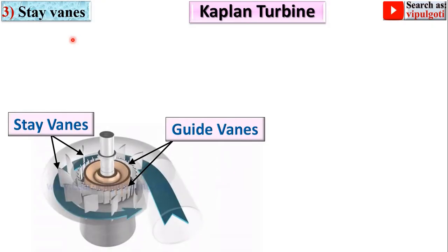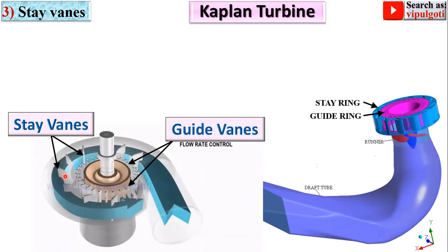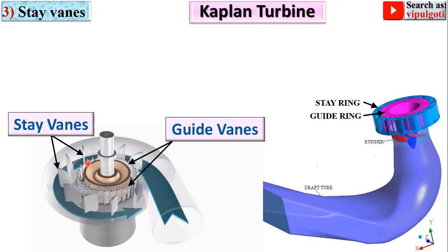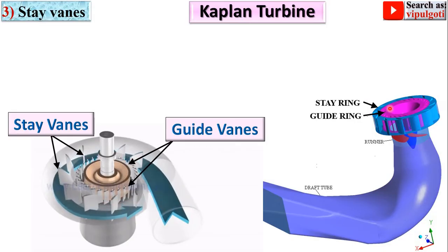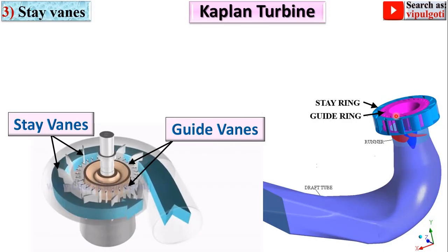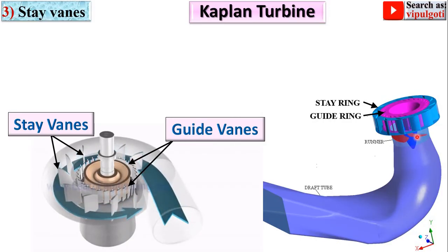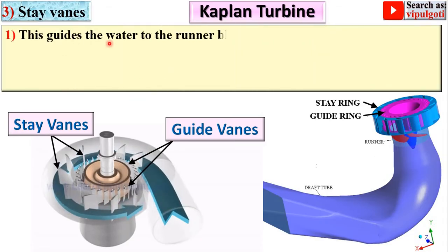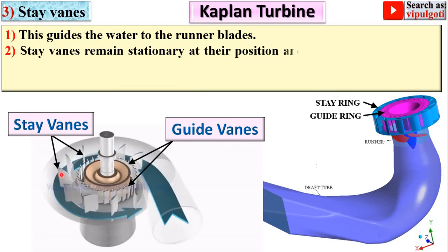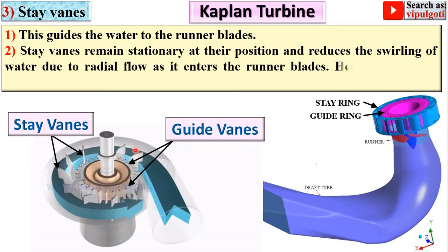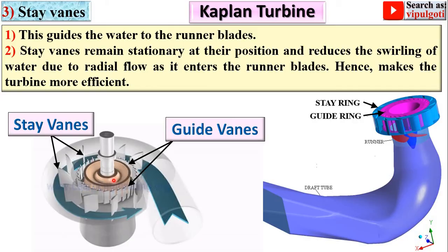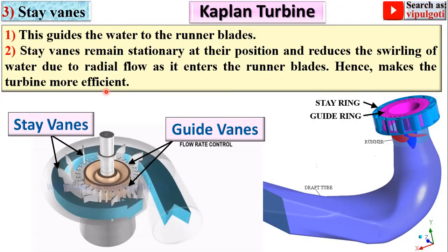Third part: stay vanes. The stay vanes guide water to the runner blades. Stay vanes remain stationary at their position and reduce the swirling of the water due to the radial flow as it enters the runner blades, hence making the turbine more efficient.